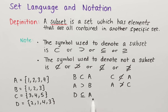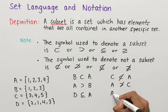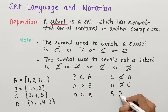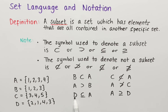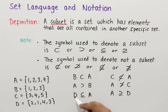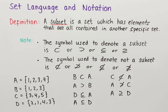We could also write the same statement in the following way: D is a subset of A and they can be equal. Likewise, we could say that A is a subset of D, because every element in A is in D. So we'd write A is a subset of D, and they can be equal. We can also write that in the reverse orientation.